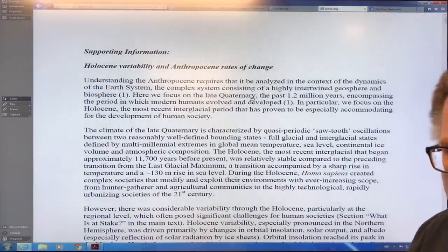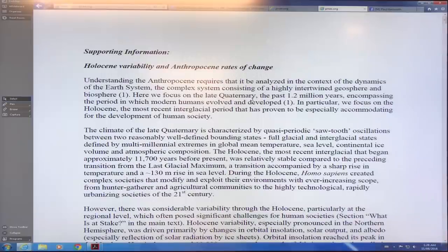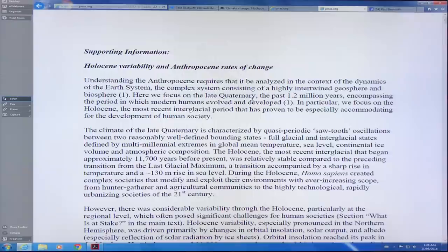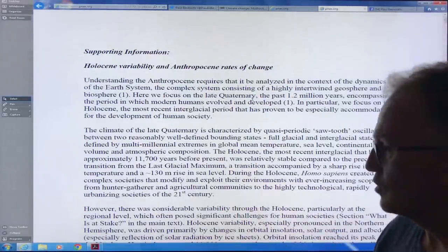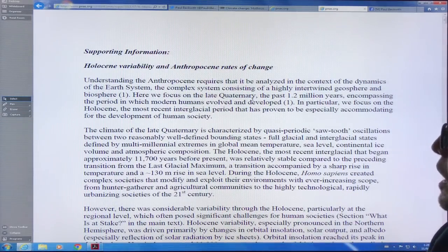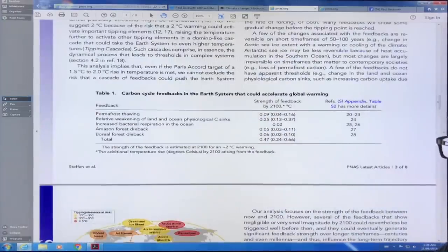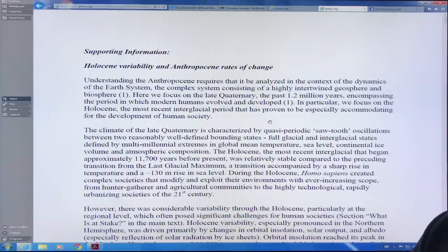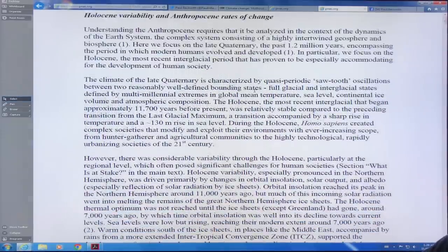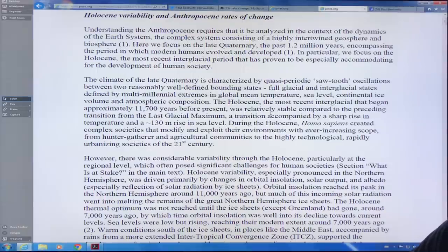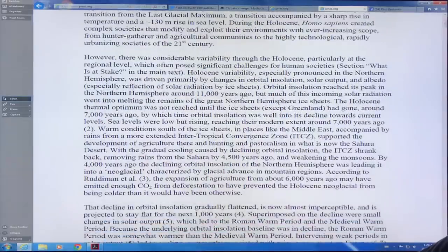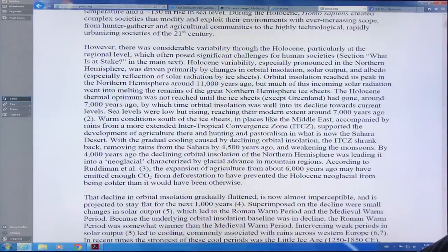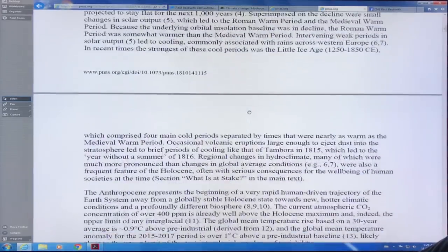Now there is supporting information on this. I just want to talk about some of this because this is where the numbers are. This is a very good read. Get this article. If you go in this article here somewhere near the appendix, there's an appendix. Just click on one of the links. Here's the appendix here. It talks about the Holocene variability and rates of change in the Anthropocene. I want to point out some of the key things, the key rates of change.